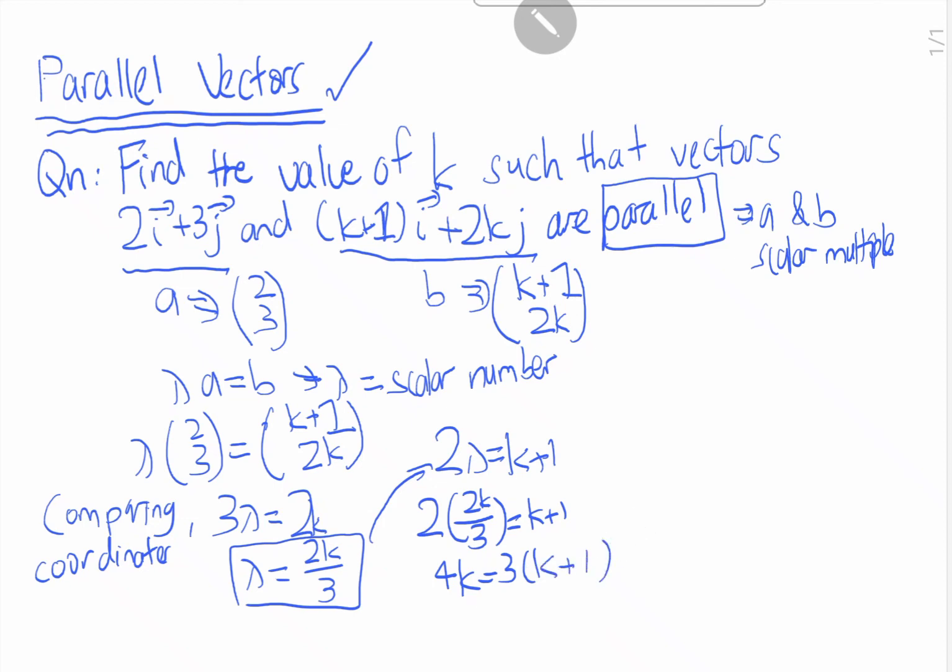So therefore, we get 4k equals 3k plus 3. Hence, we get k equals 3.